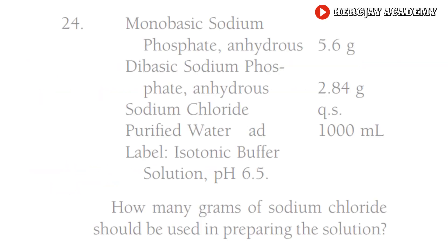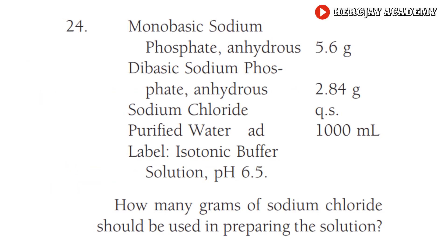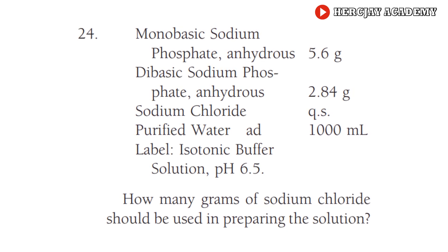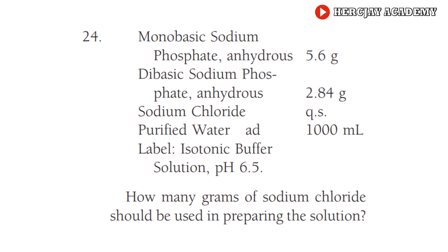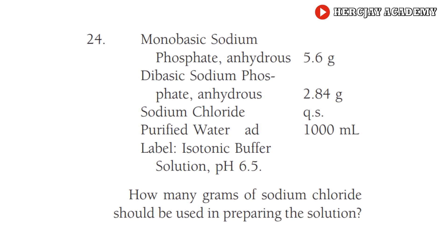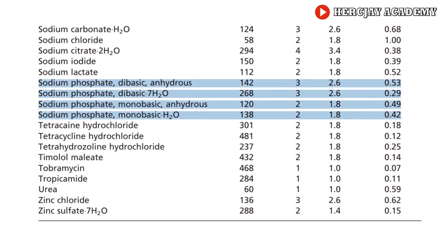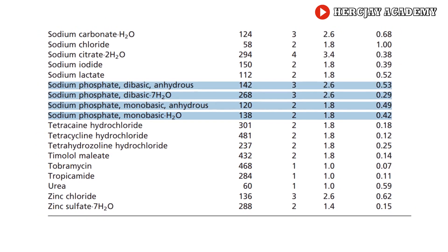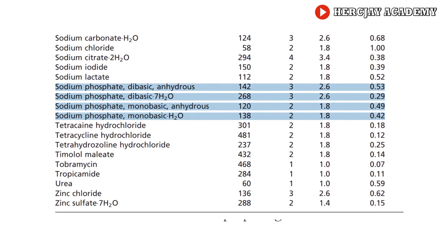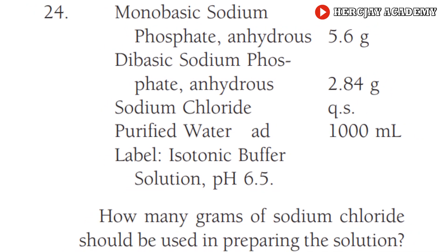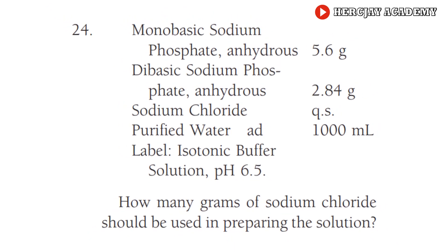Let us proceed to Question 24. The prescription contains monobasic sodium phosphate anhydrous 5.6 g, dibasic sodium phosphate anhydrous 2.84 g, sodium chloride QS, and purified water to 1000 mL. How many grams of sodium chloride should be used? We obtain E-values from the reference table: anhydrous monobasic sodium phosphate = 0.49, anhydrous dibasic sodium phosphate = 0.53. Since the total volume is 1000 mL and 0.9% NaCl is isotonic, we first calculate the NaCl needed to make the entire 1000 mL isotonic: 0.9 g per 100 mL → 9 g per 1000 mL.